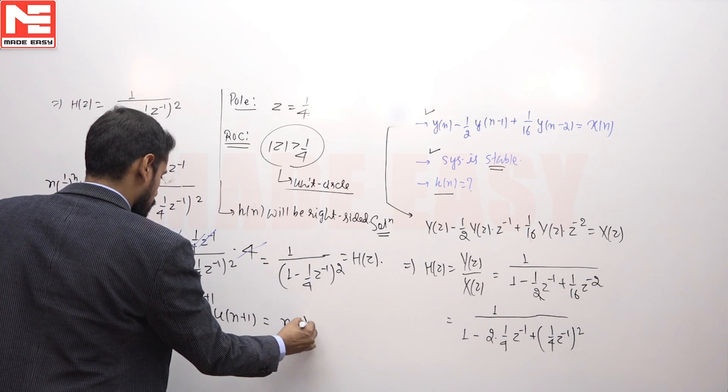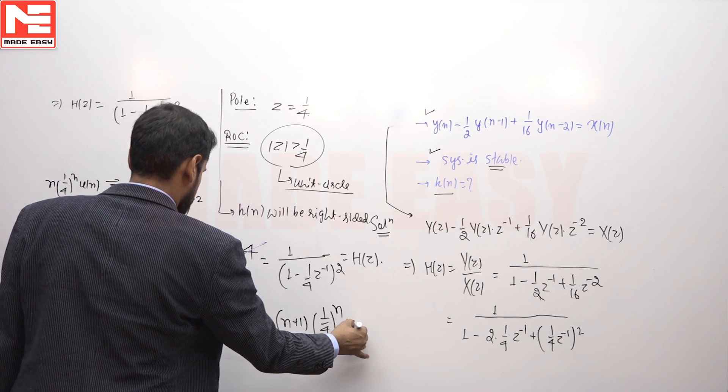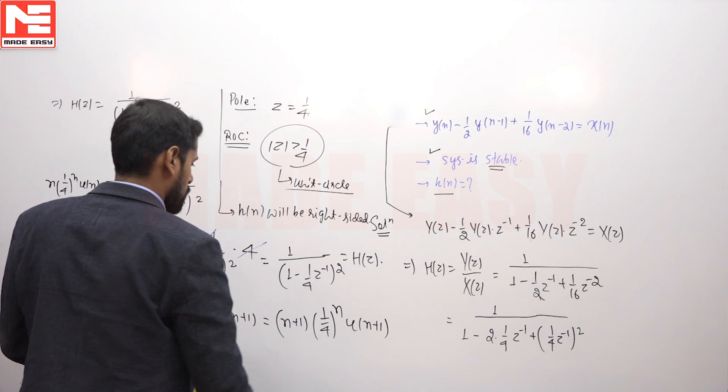We can write this as (n plus 1) times (1/4) to the power n times u(n plus 1).